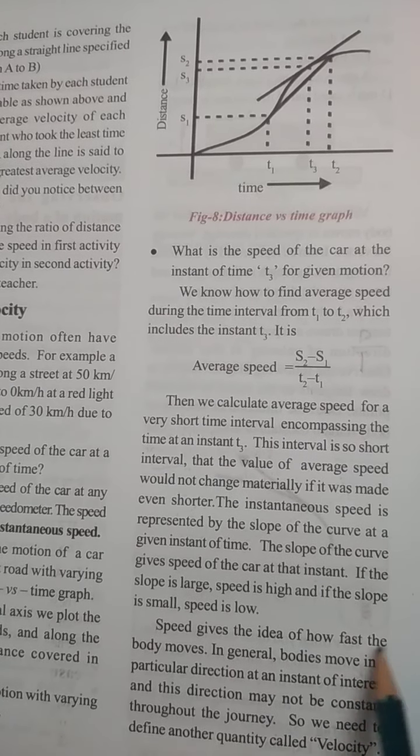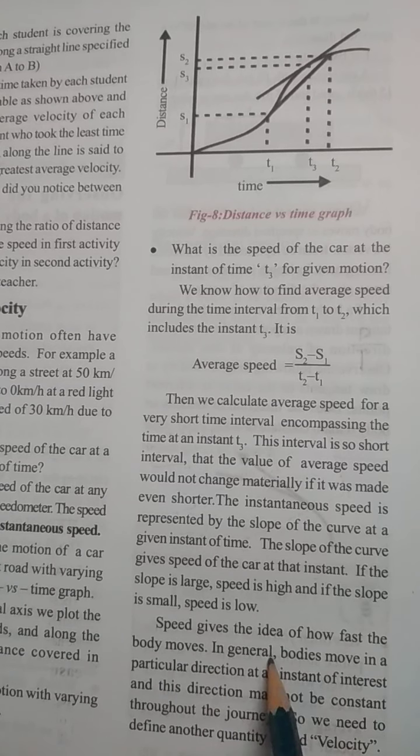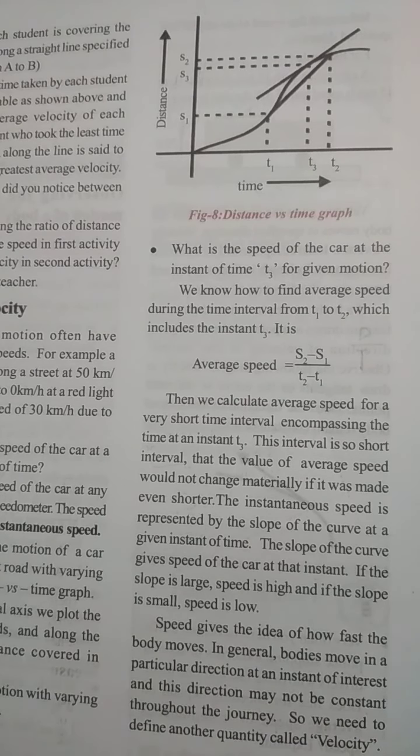Speed gives the idea of how fast the body moves. In general, the body moves in a particular direction at any instant of interest. And this direction may not be constant throughout the journey. So we need to define another quantity called velocity.